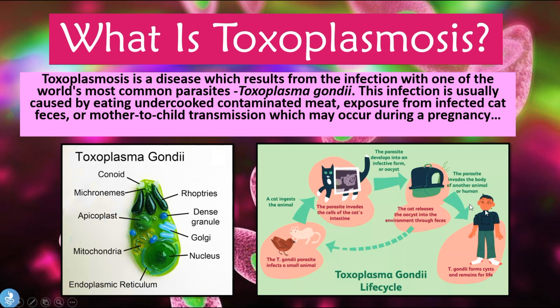We can also get the infection from eating other animals such as pork, beef, or lamb products, meaning the pig, cow, or lamb was also infected. The disease can also infect humans directly because the cat releases oocytes into the environment through feces. Once these oocytes contact a human, they cause infection. Cat feces can also contaminate water sources and soil, so garden vegetables or fruit grown in contaminated soil can cause the disease after ingestion.